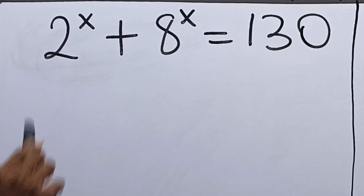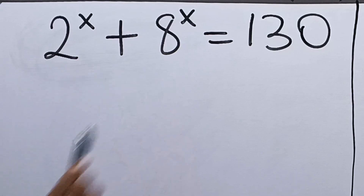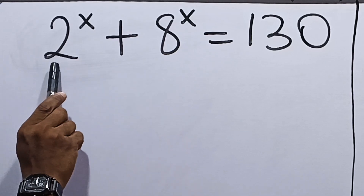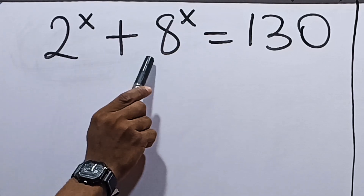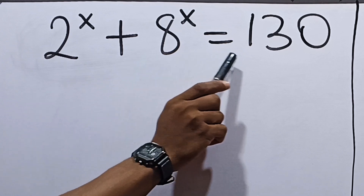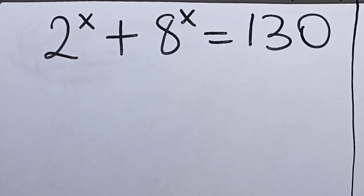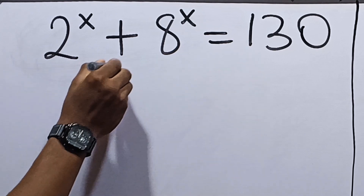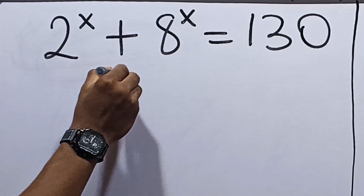Let's solve this Olympiad equation on the board quickly. It says 2 raised to the power x plus 8 raised to the power x is equal to 130, and we're going to solve for the value of x.